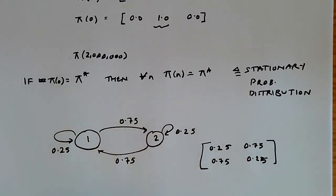Now, let's say that we start with π_0 equals [0.5, 0.5].